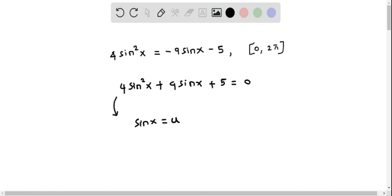So when we do that, this equation becomes 4 times sin²x, so that will become u², plus 9 times sinx, and that will become u, plus 5 equals 0. So this looks more similar to a quadratic equation.